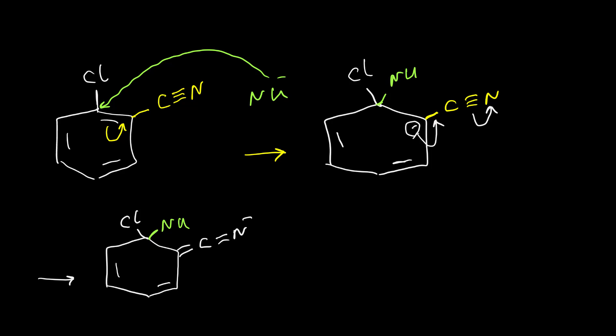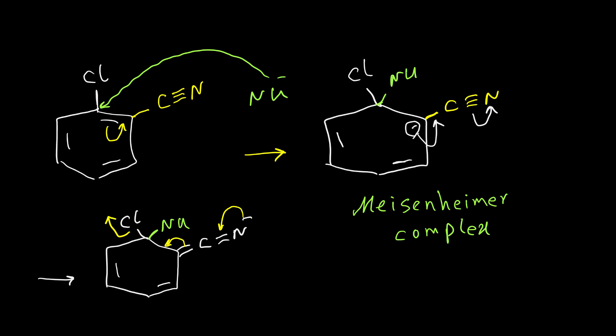This resonance stabilizes the anion. The name of this intermediate is the Meisenheimer complex. The negative charge on nitrogen can go back and re-form the cyanide group, then this pi bond goes back and restores the aromaticity of the ring. This causes expulsion of chlorine, and we have the final product with a C triple bond again and the double bond restored inside the benzene ring.